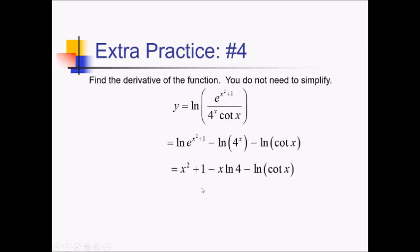Moving forward, let's differentiate from left to right. The derivative of x squared is 2x, and 1 differentiates to 0. For x ln of 4, remember ln of 4 is a constant, so this is really just the constant rule giving us negative ln of 4. Finally, using the chain rule, I have ln of something — derivative of that is 1 over the something — so minus 1 over cotangent of x, times the derivative of cotangent, which is negative cosecant squared of x.